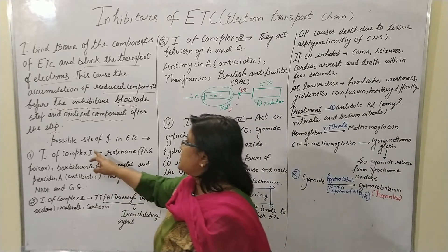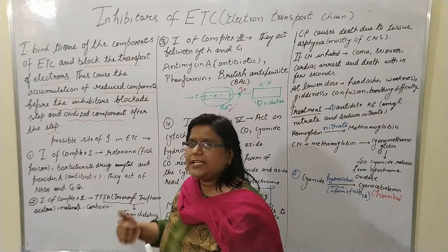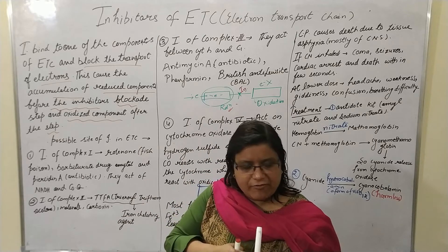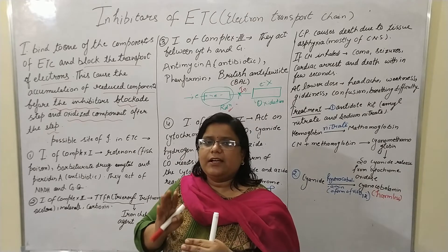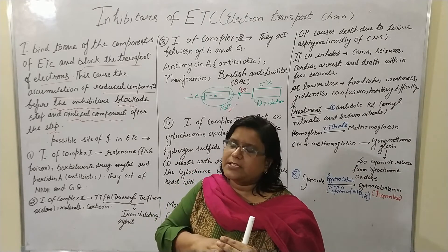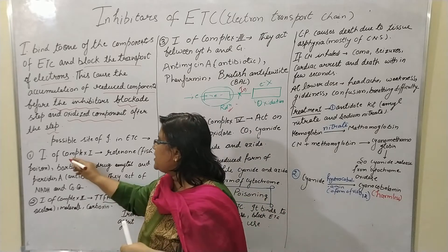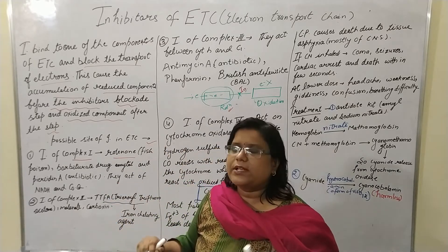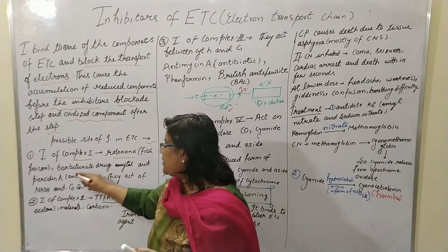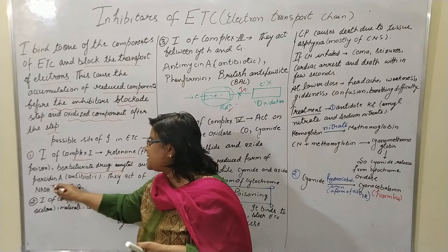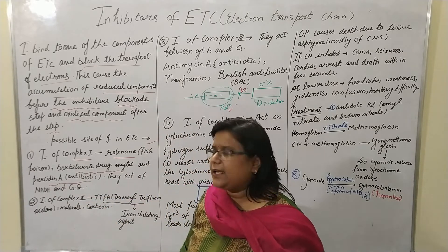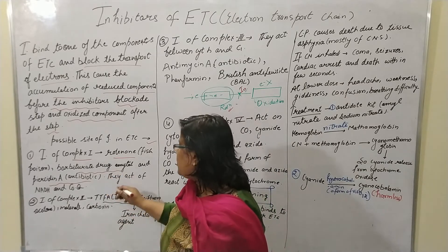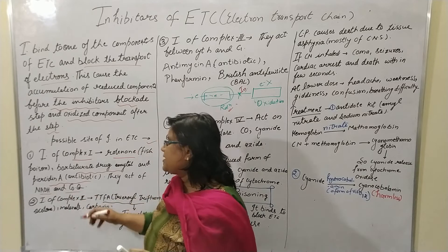Now, some possible sites of inhibitors in the ETC. The inhibitors of complex 1 include rotenone, which is also known as fish poison; the barbiturate drug amital; and piericidin A, which is an antibiotic. These act on the NADH:coenzyme Q step.